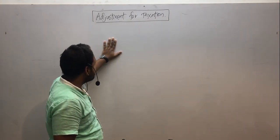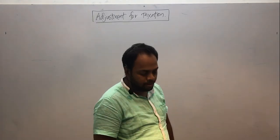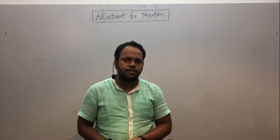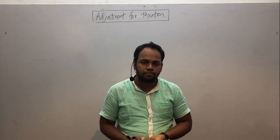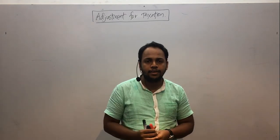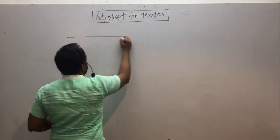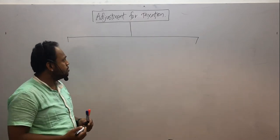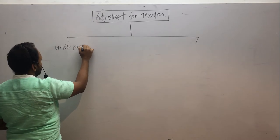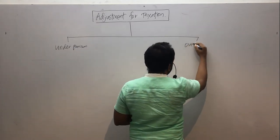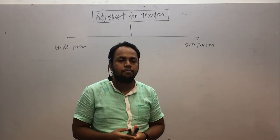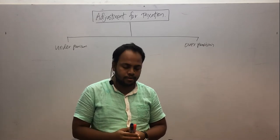I'm going to discuss the adjustment for taxation for company final accounts. Company final accounts questions always include taxation as the main adjustment. When you take the past paper questions, every year the company final account taxation adjustment is given. There are two methods we can use for the company accounts tax adjustment: one is underprovision and the other one is overprovision. I'll take two examples to explain this, and we will do some past paper questions.